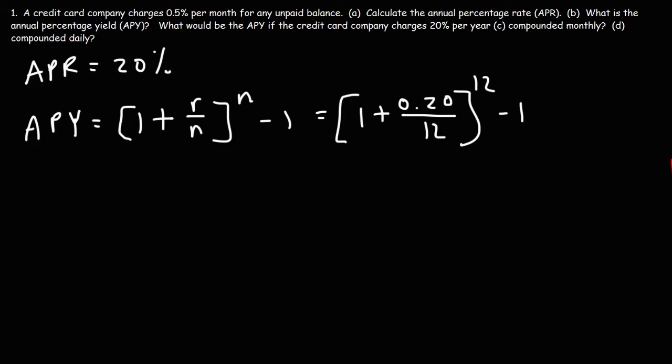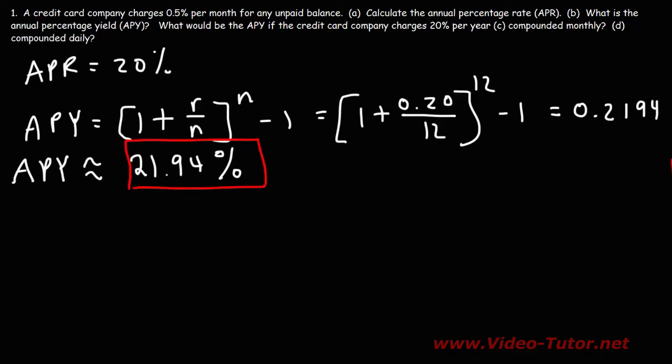1 plus 0.20 divided by 12. That's 1.016 repeating. And then if you raise that to the 12th power, and then subtract it by 1, you're going to get 0.2194. So, the APY is approximately 21.94%. So, notice that this difference is more significant than the last example. Now that the interest is higher, the APR and the APY, they're not very close to each other. The APY is significantly higher than the APR. Almost 22% compared to 20%.